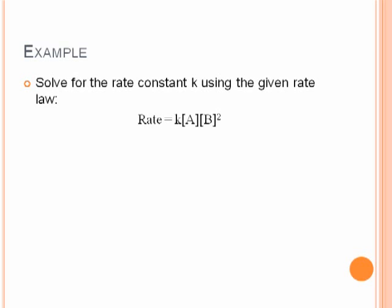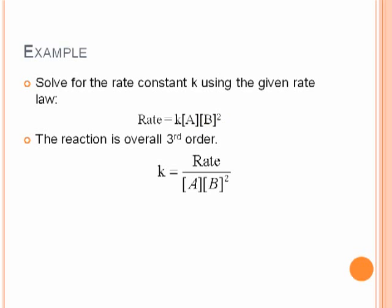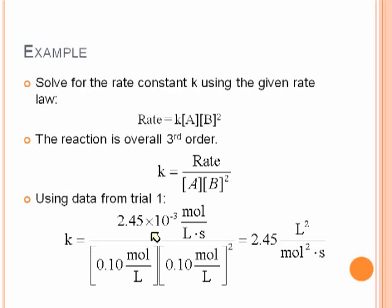Now we can solve for the rate constant. Since this is idealized data with no error in it, we can just use one reaction. Practically speaking, if you have experimental data, you would calculate it for all three trials and average it. So the reaction is overall third order. If you add the exponents, that's 1 for A and 2 for B. Solving for k, k equals the rate divided by the concentration of A times the concentration of B squared. Using the data from trial 1, we plug in 2.45 times 10^-3 moles per liter per second for the rate and 0.1 moles per liter for the concentrations of A and B. The concentration of B is squared. We get 2.5 liters squared per mole squared per second.